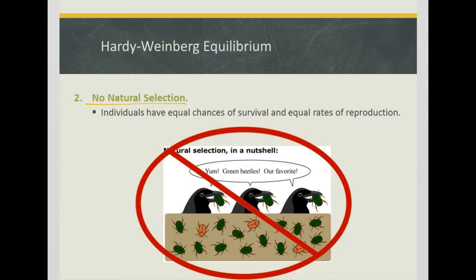The second condition is that no natural selection can occur, so everybody must have equal chances of survival and an equal rate of reproduction.